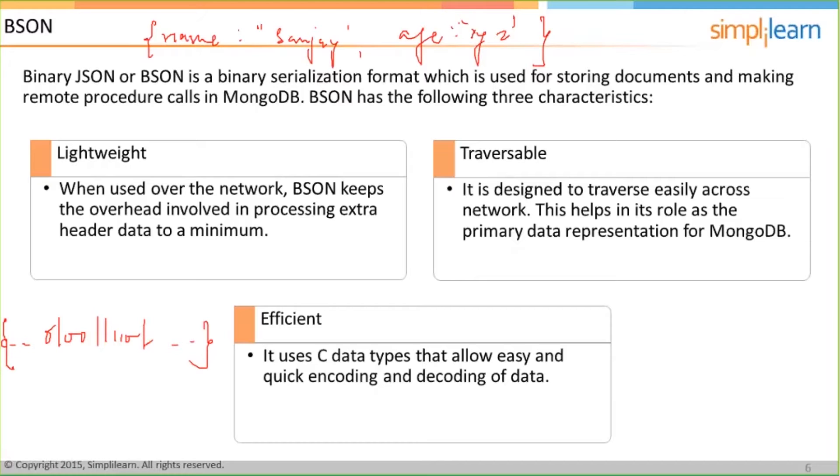So the storage BSON may require some more data to be stored internally. It means suppose the JSON document was 10 MB, it may be possible that the BSON for the same document is say 12 MB. But the added data file makes the BSON get readily traversable across the network, which is why it is the preferred measure of how the data should be stored inside MongoDB.